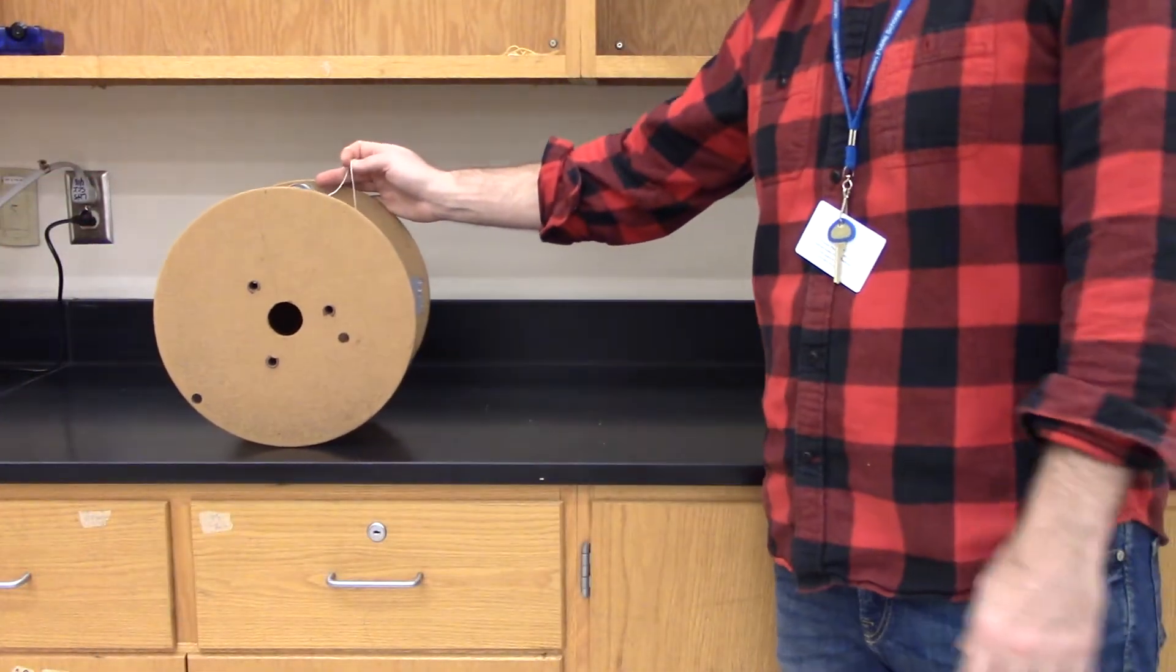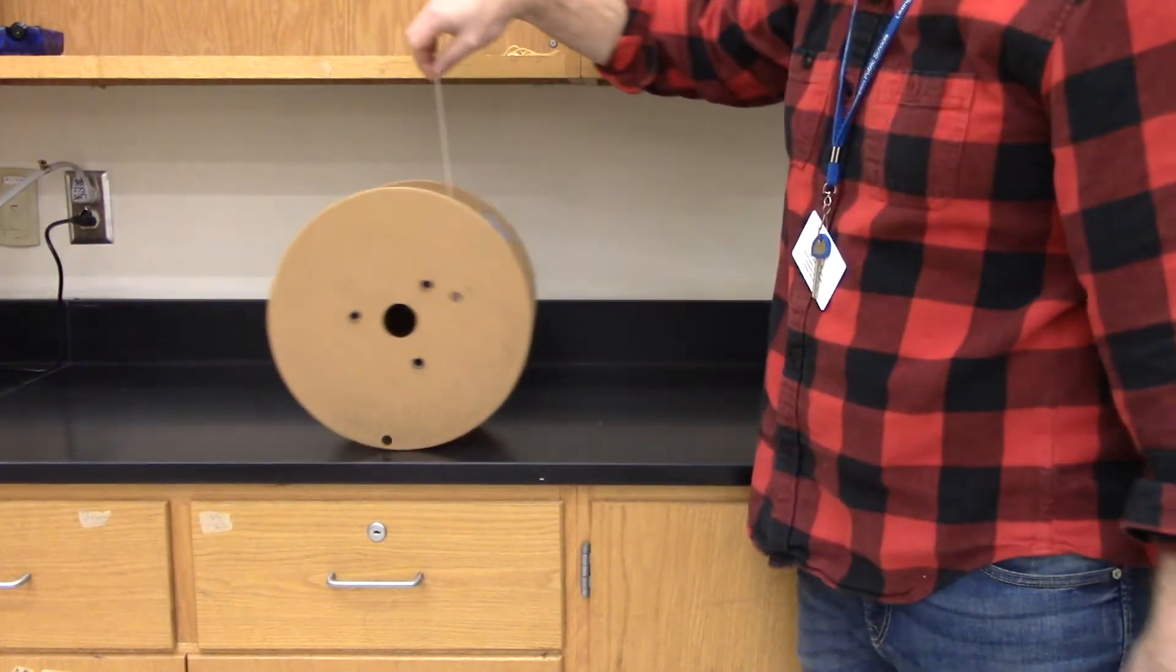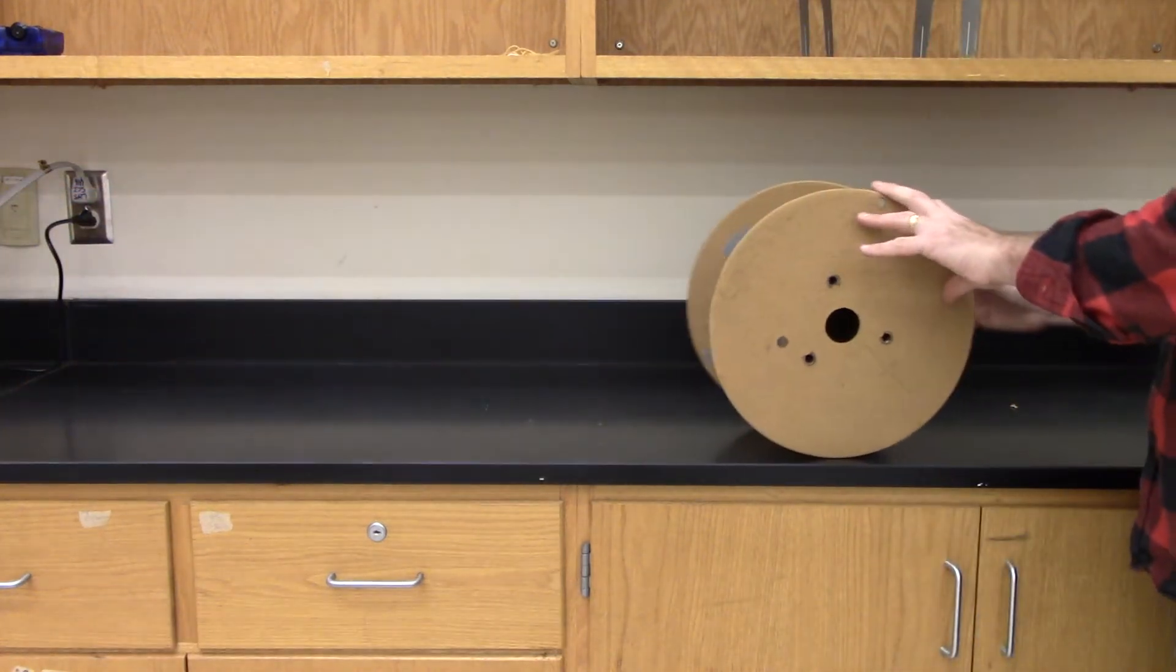And what we're going to find is that if we pull the string straight up, it'll roll one way. If we pull the string this way, it'll roll onto itself.